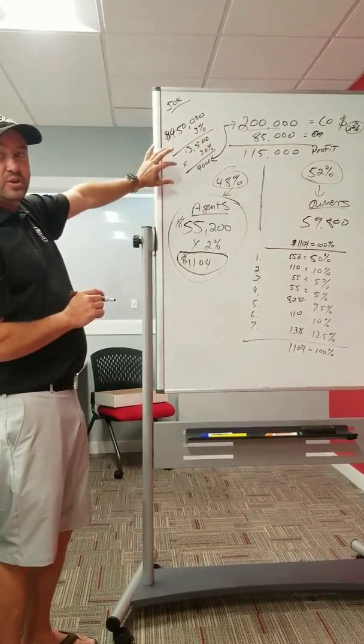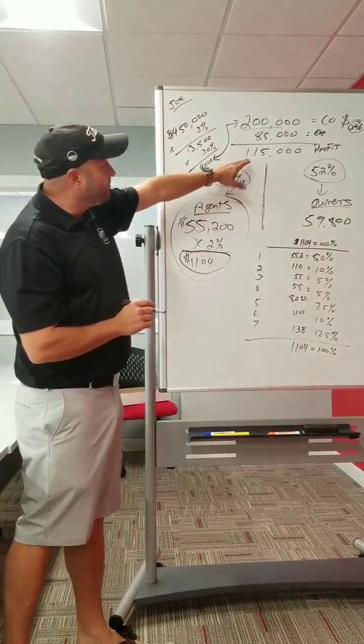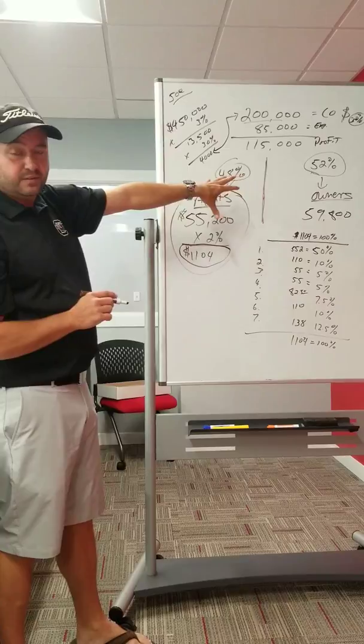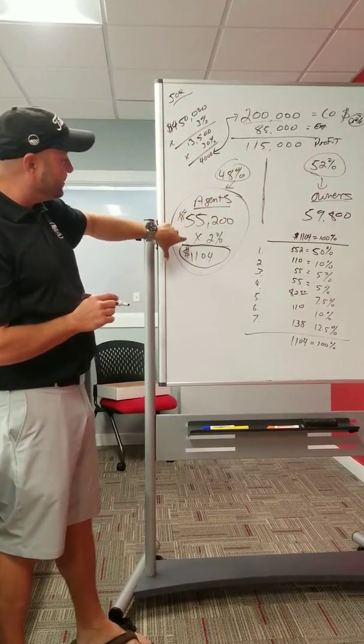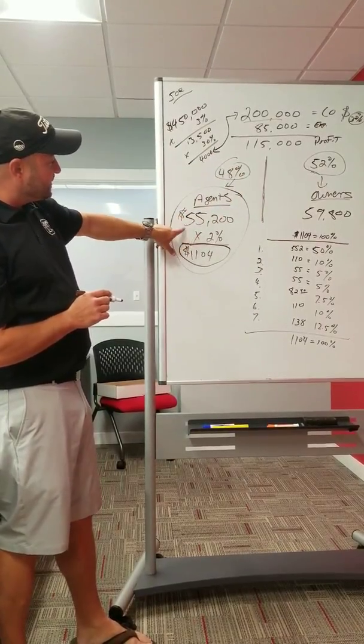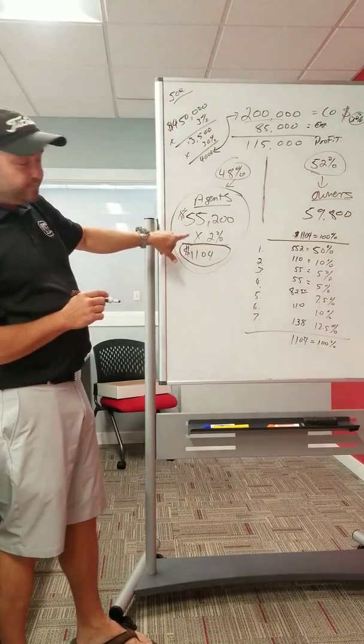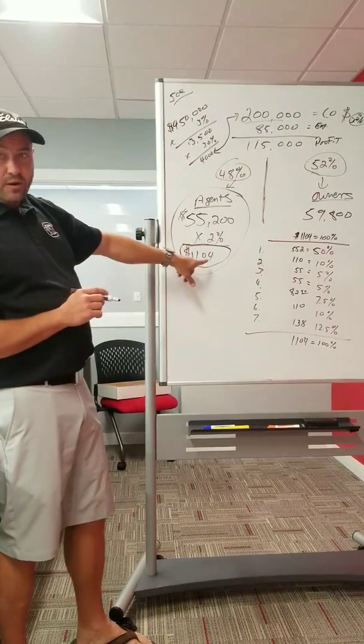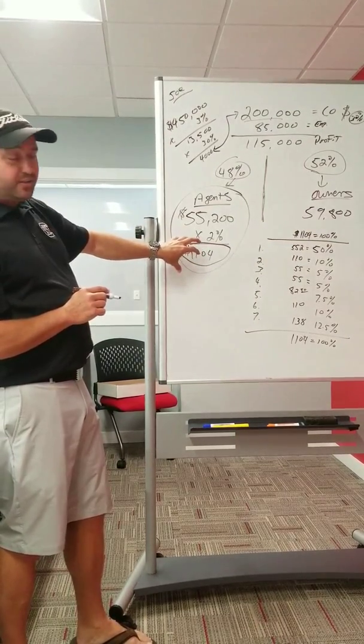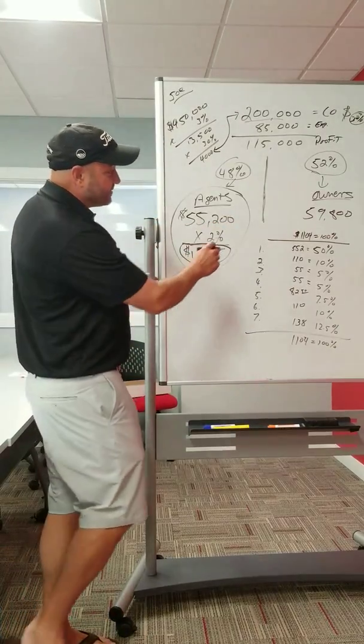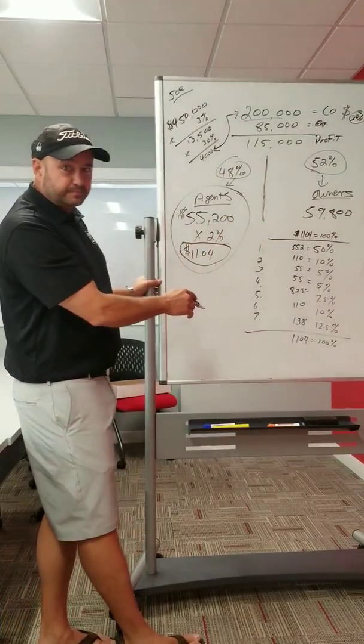So we're going to give back 2% of this $55,000 is going to be attributed to these closings. So you're not getting part of Joe's commission. You're getting part of the market center's profits, the owner's profits. The owners are sharing that profit with you. So 2% of $55,200, that's $1,104. So $1,104 is going to be paid back to seven people.